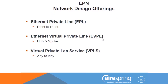Let's look at our building blocks for this private Layer 2. The family name is EPN — Ethernet Private Network. We offer three design offerings: a point-to-point called EPL (Ethernet Private Line), a hub-and-spoke called EVPL (Ethernet Virtual Private Line), and true VPLS — virtual private LAN service — which is any-to-any mesh-like Layer 2 connectivity.